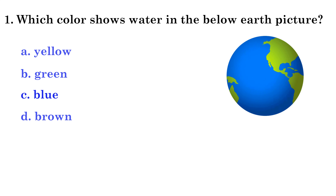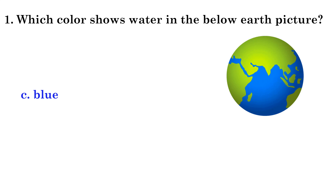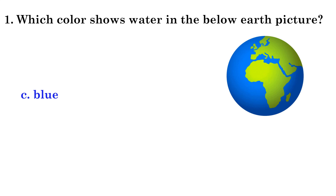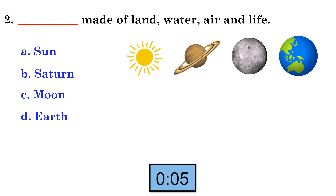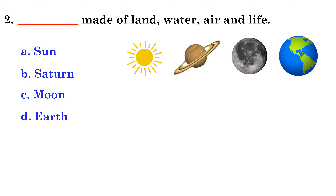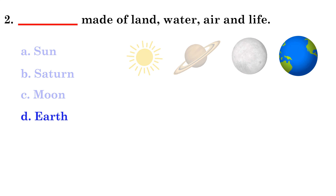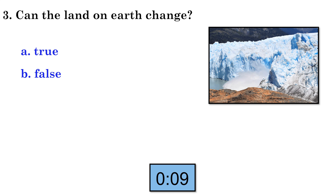Question 1: Which color shows water in the Earth picture? Earth is made up of land, water, air, and life. Question 2: Earth is made up of land, air, and earth.